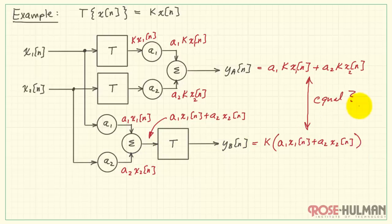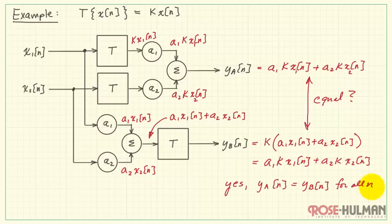Now we ask ourselves a question. Are these two equal for all values of n? Well, I can apply the distributive property here. K distributes across and I can also interchange the order of the k and the a coefficients. And sure enough, we see that these two are in fact the same. Therefore, we conclude that the system T is linear.